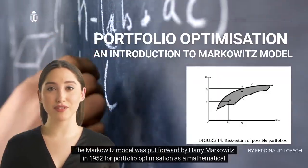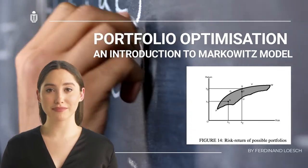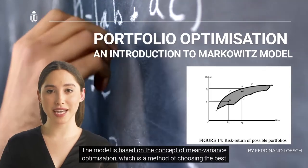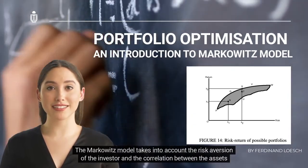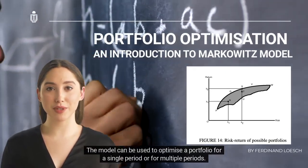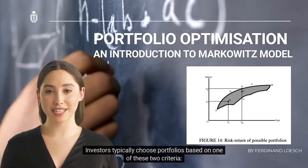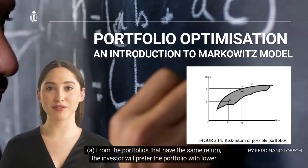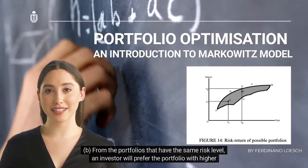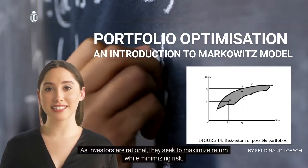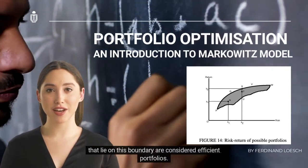The Markowitz model, put forward by Harry Markowitz in 1952, is a mathematical model used to determine the optimal investment portfolio based on the concept of mean-variance optimization. It chooses the best investment portfolio based on expected return and variance of return, taking into account the investor's risk aversion and the correlation between assets. The model can optimize a portfolio for a single period or multiple periods. The most efficient portfolios offer the highest return for a given level of risk, or the lowest risk for a given return.